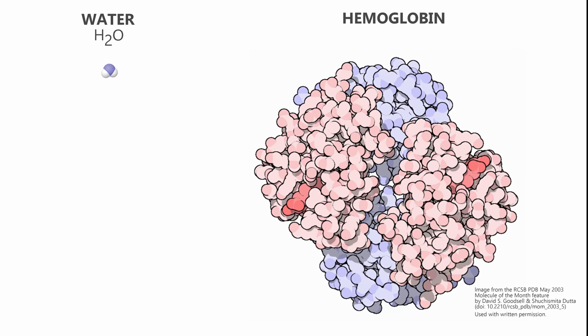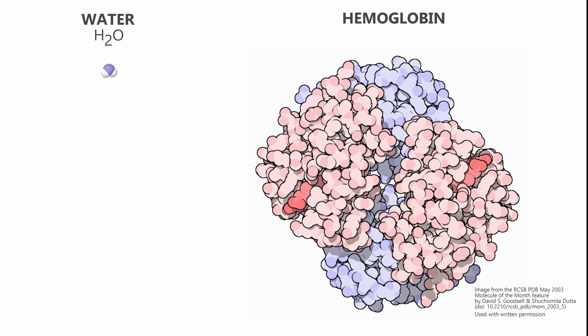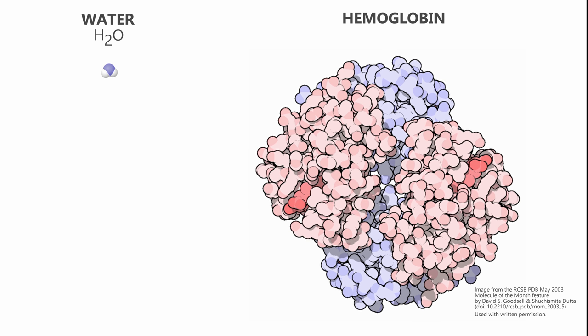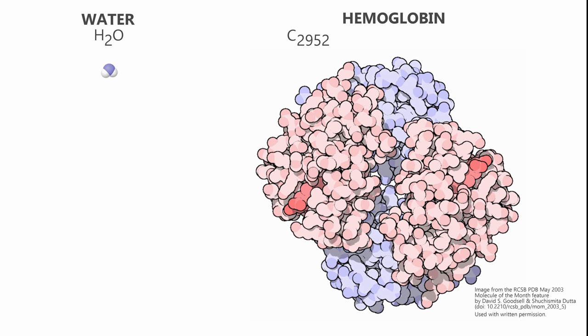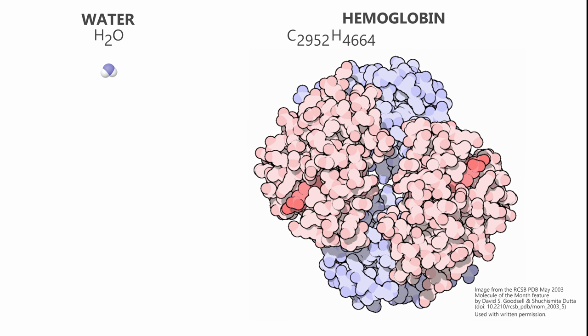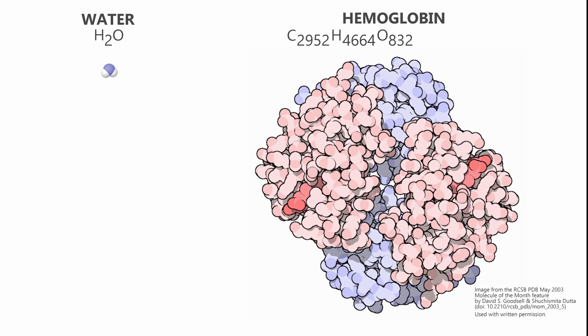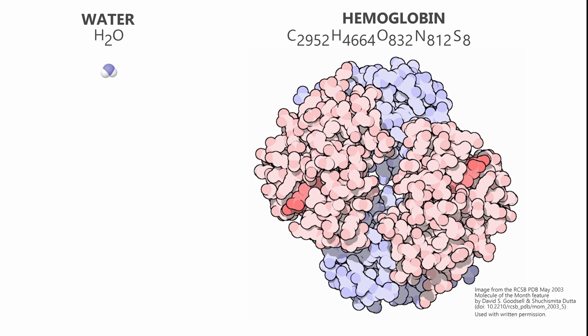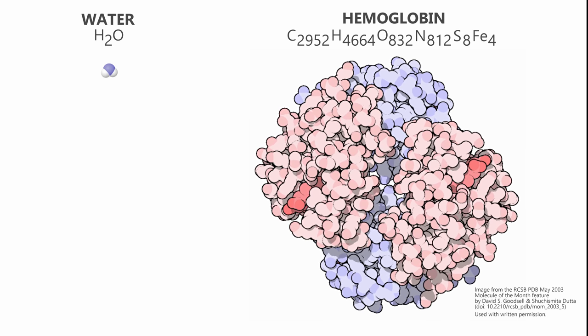Hemoglobin, on the other hand, is way more complicated. It is made of... Hold on. Let me get this right. 2,952 carbon atoms, 4,664 hydrogen atoms, 832 oxygen atoms, 812 nitrogen atoms, 8 sulfur atoms and 4 iron atoms.